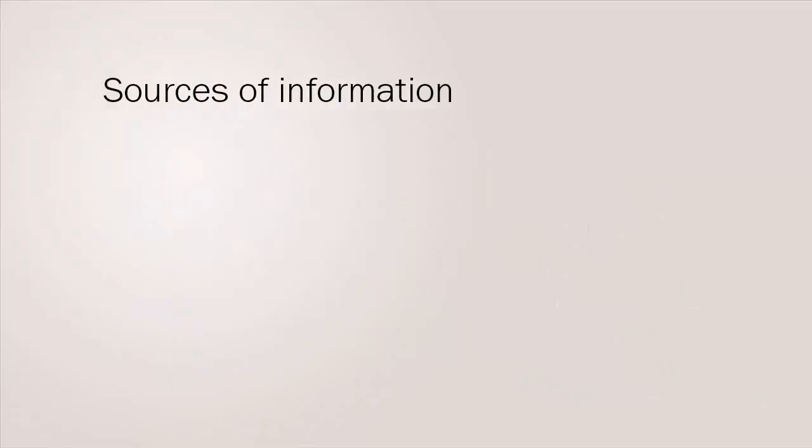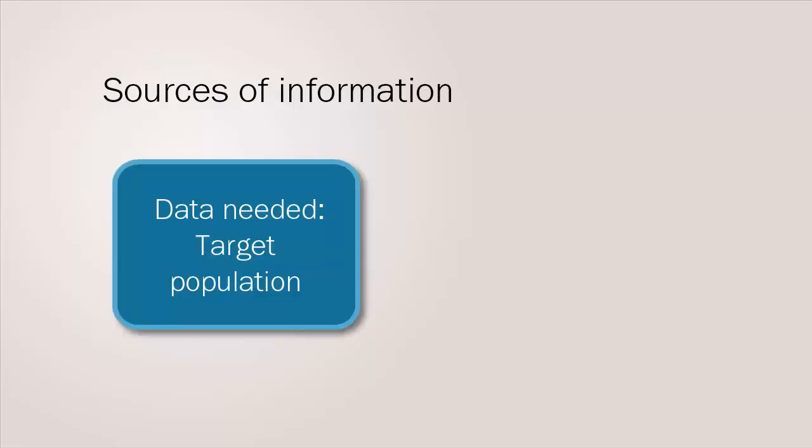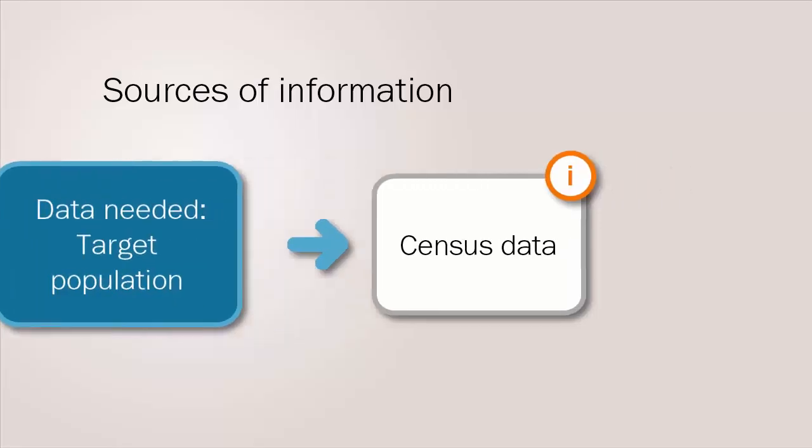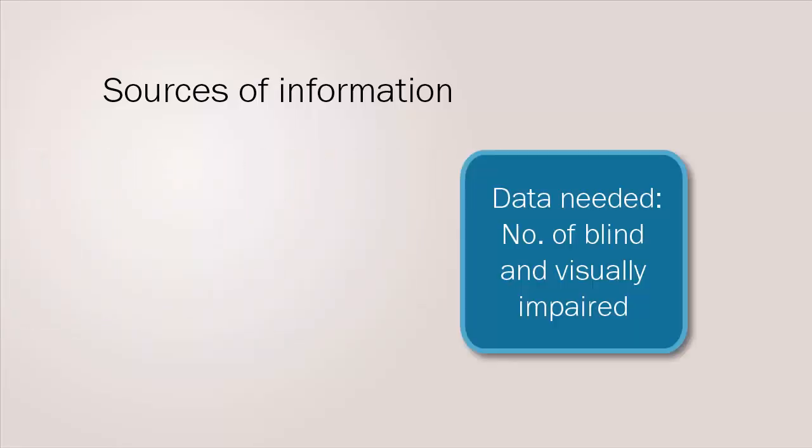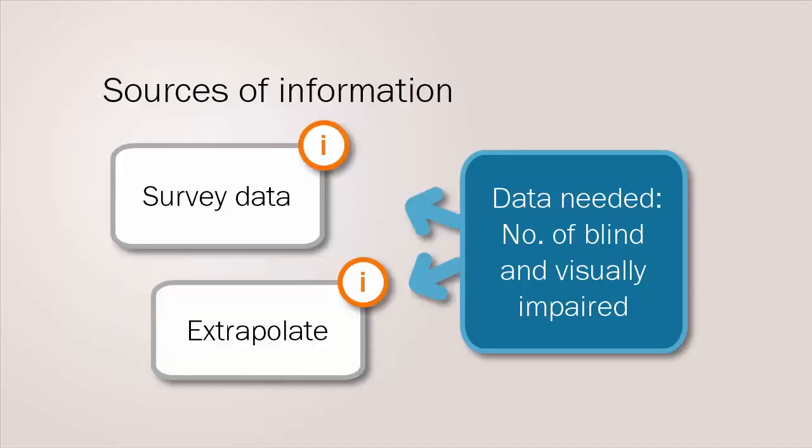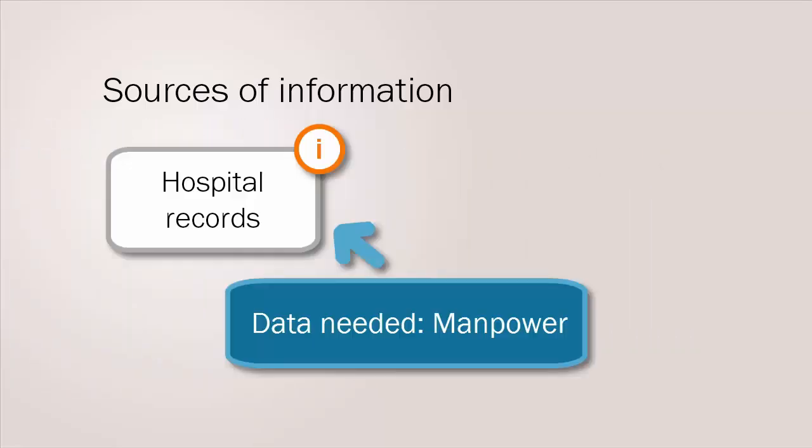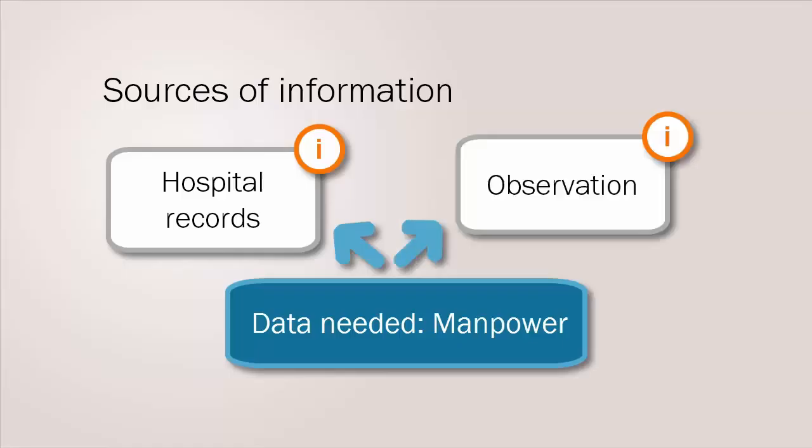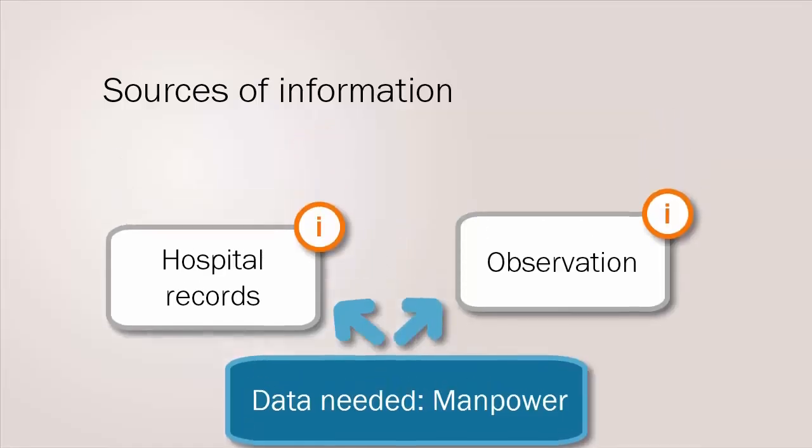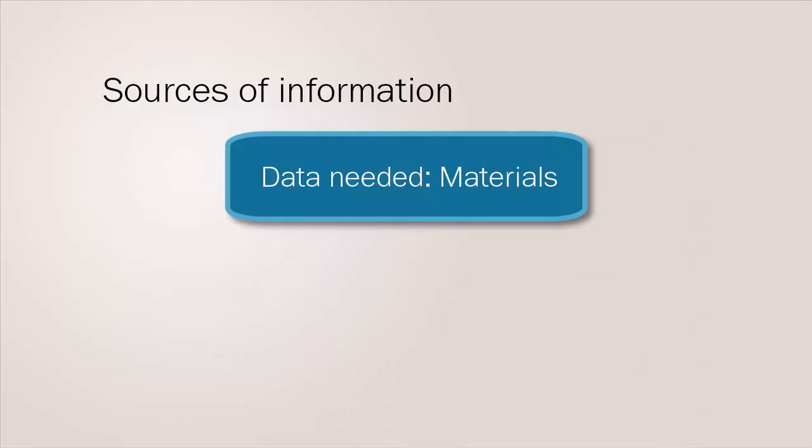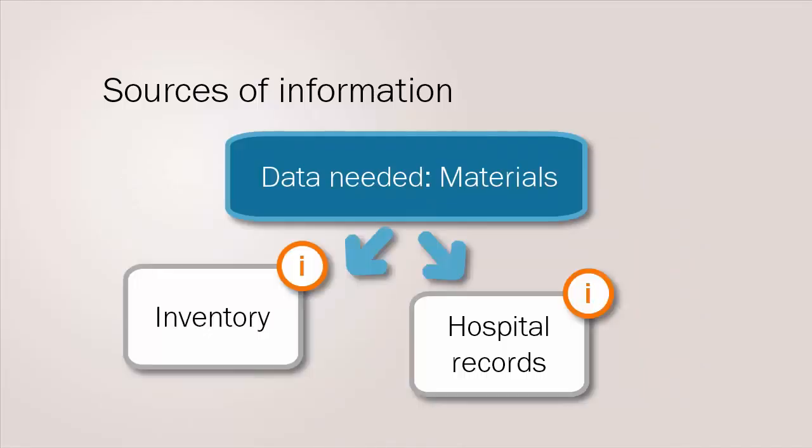Finding good information for a situation analysis means looking for it in a number of different places. For data on a target population, census data is a good place to start. To estimate the numbers of blind and visually impaired people, we can carry out a local survey or we can extrapolate the information from a previous study in a similar region. For data on manpower, we can look at hospital records if they exist or we can observe the unit. For materials information, we can again use hospital records or take our own inventory.